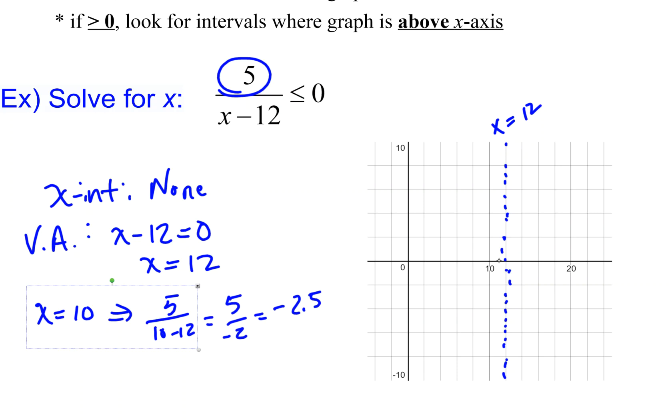At x equals 10, I'm at negative 2.5, so about here. That means on this side, I'm negative. I'm going to hug this vertical asymptote as I get closer to it, and I'm going to stay below the line y equals zero, or the x-axis, because that's my horizontal asymptote.